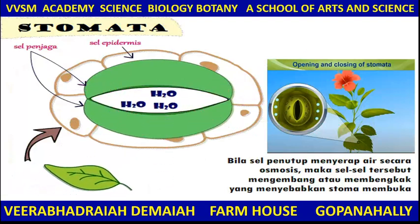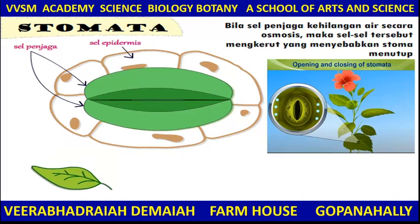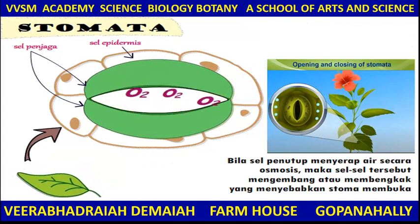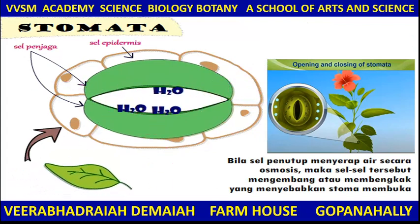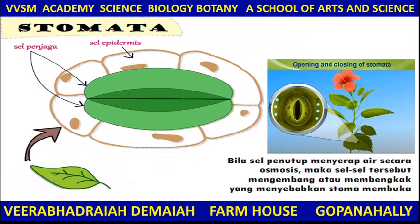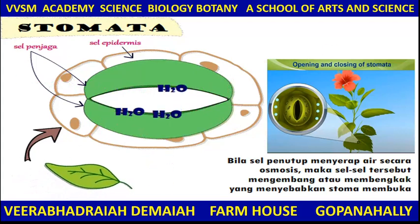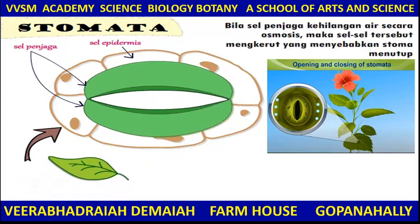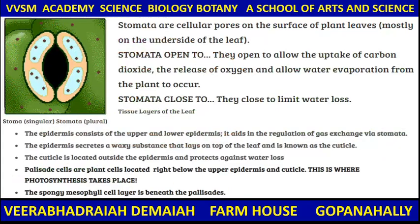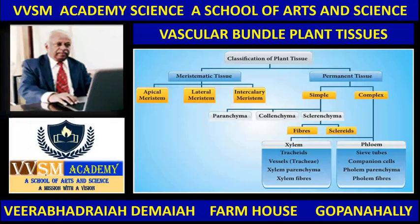Stomata is an important organ in the leaf and an important part of the plant. Carbon dioxide is in and oxygen is out along with water vapor. Stomata are the cellular pores on the surface of plant leaves. Classification of plant tissue: meristematic tissue and permanent tissue.